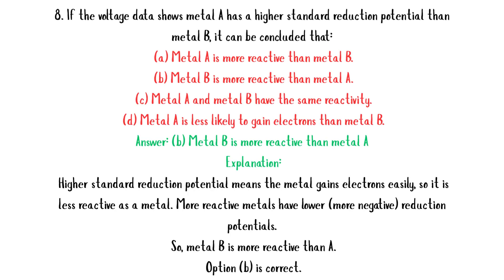MCQ 8: If the voltage data shows metal A has a higher standard reduction potential than metal B, it can be concluded that — A. Metal A is more reactive than metal B. B. Metal B is more reactive than metal A. C. Metal A and metal B have the same reactivity. D. Metal A is less likely to gain electrons than metal B. Answer: B. Explanation: Higher standard reduction potential means the metal gains electrons easily, so it is less reactive as a metal. More reactive metals have lower, more negative reduction potentials. So metal B is more reactive than A. Option B is correct.